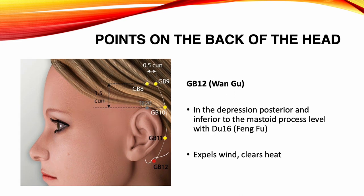Gallbladder 12, I Ku. Location: in the depression posterior and inferior to the mastoid process, level with Du 16. Functions: expels wind, clears heat. Indications: headache, stiffness of the neck, swelling of the cheek and face, ear pain, tinnitus, deafness, sore throat, toothache, mouth and eye deviation, blurred vision, seizures.